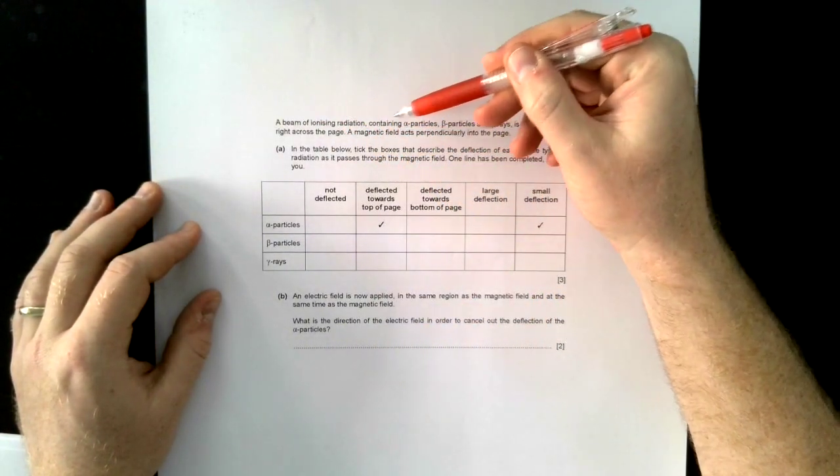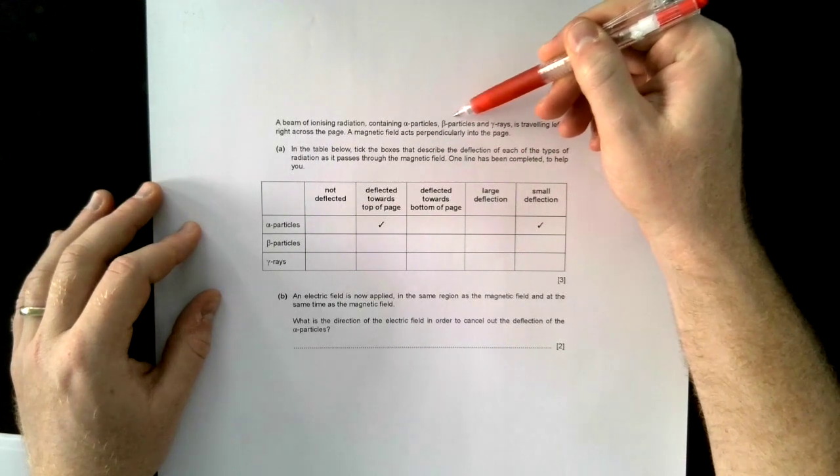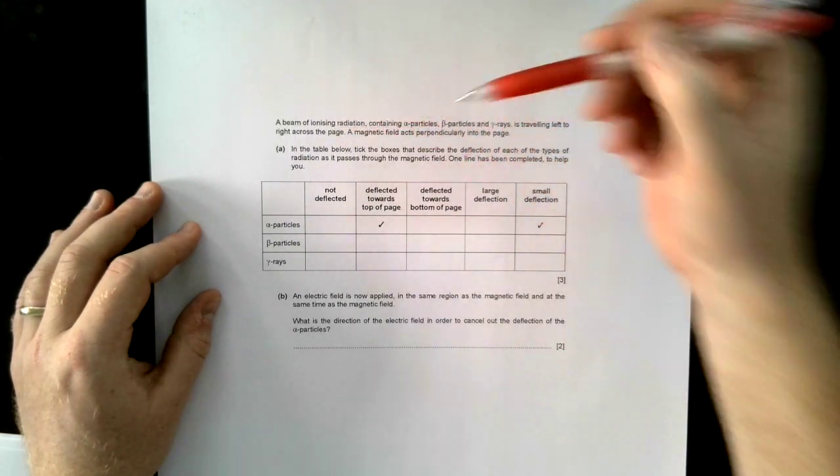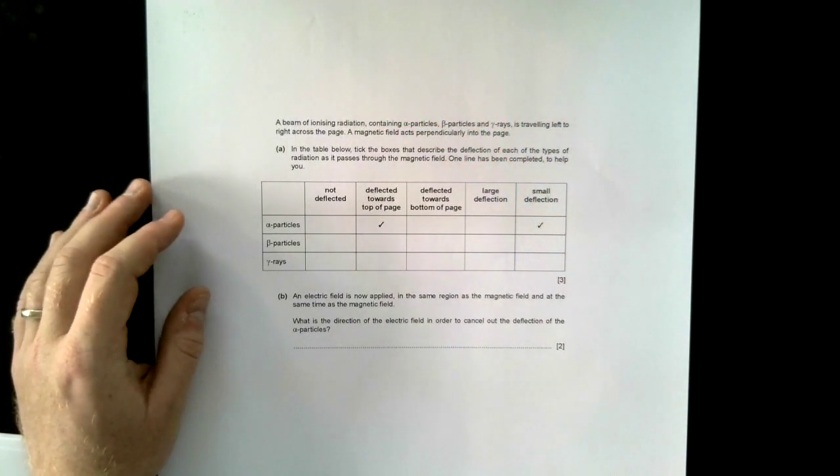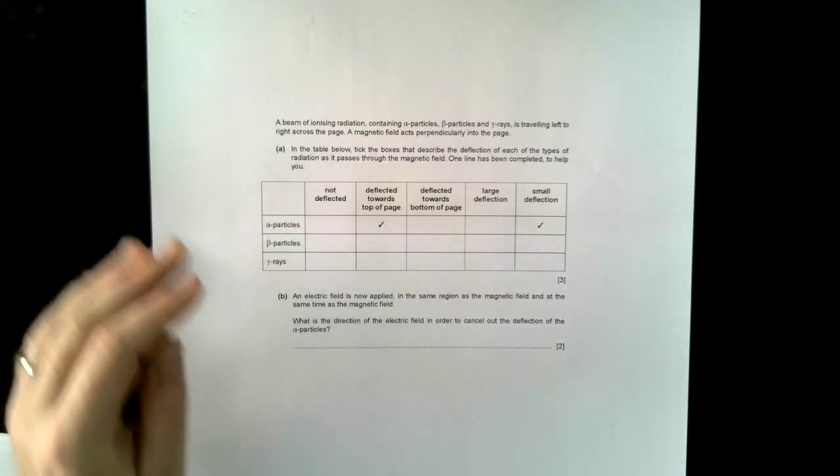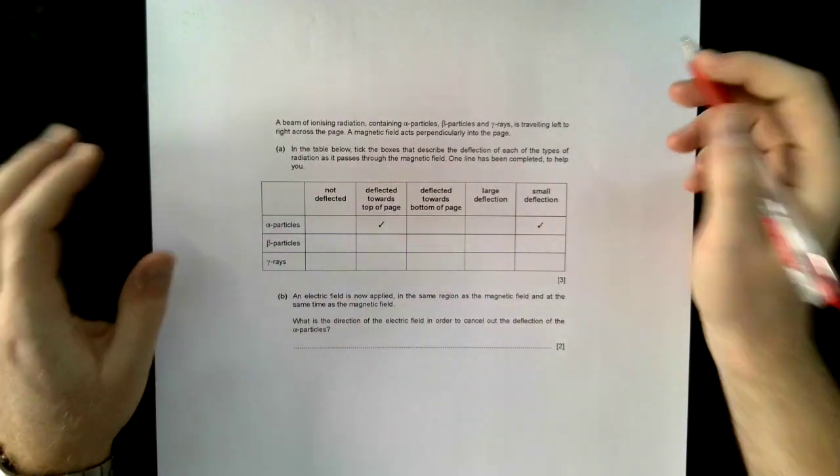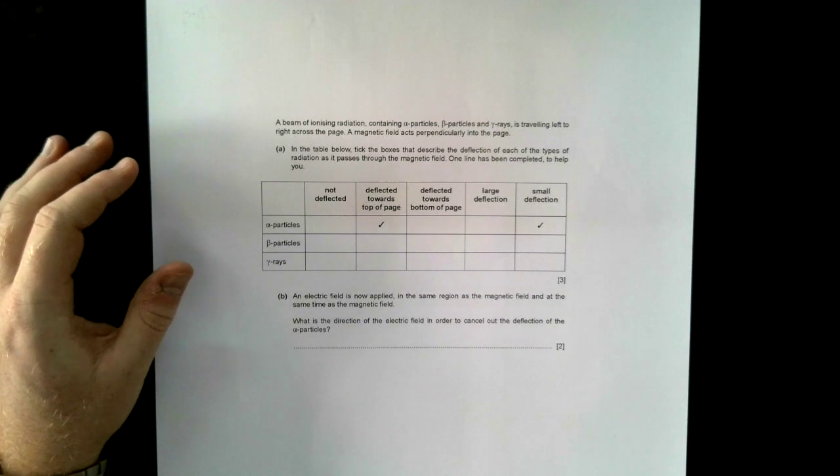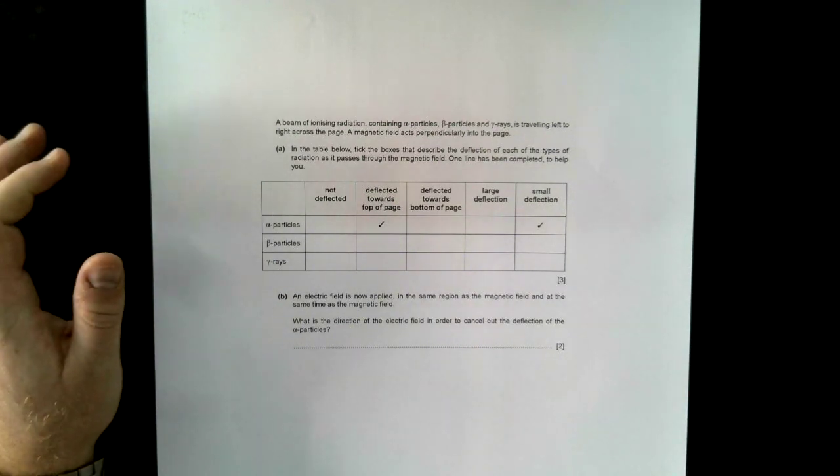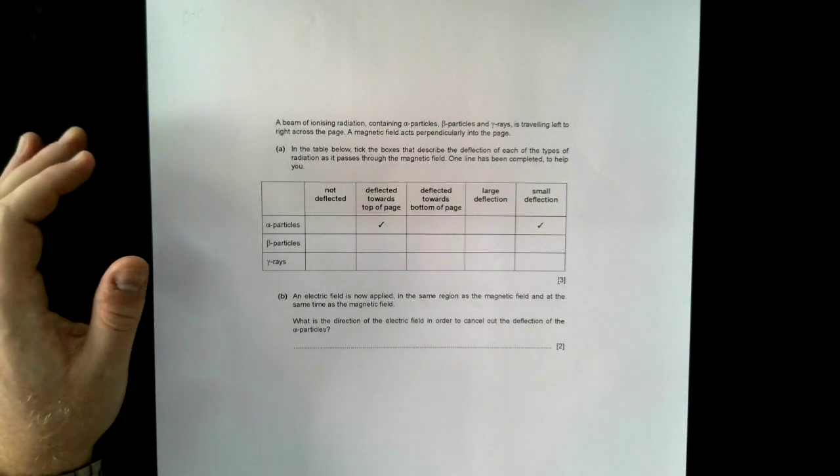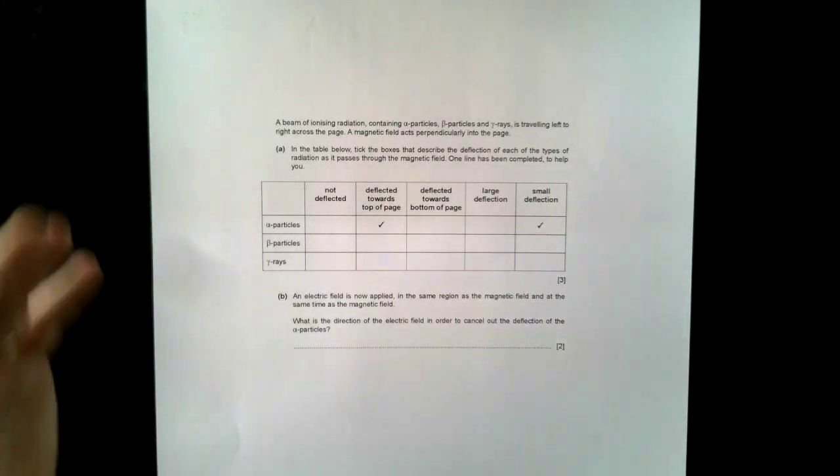So we've got here a beam of ionizing radiation containing alpha particles, beta particles, and gamma rays traveling left to right across a page. What I want you to start training your brain to do is to access all the information you might need. Now, when you actually come to do the test, you're not going to do all of this because this would be a massive waste of time. But while you're revising, use it this way.